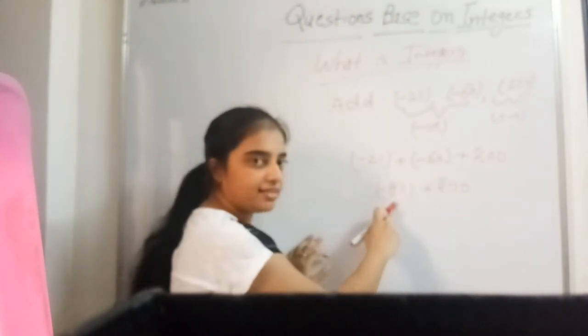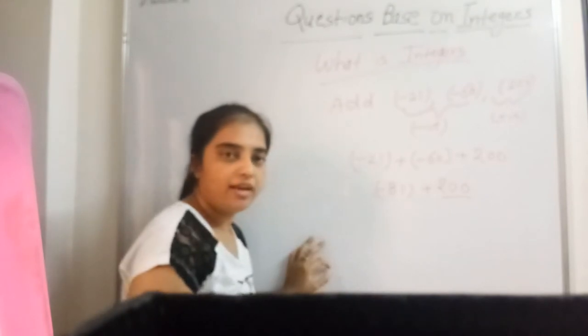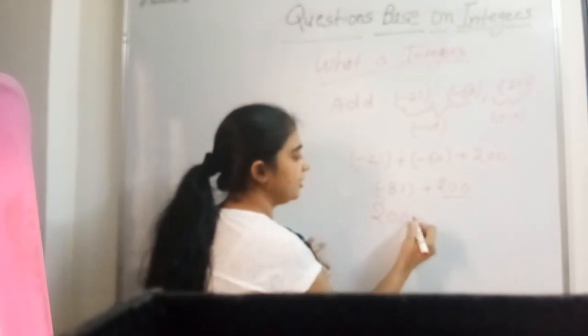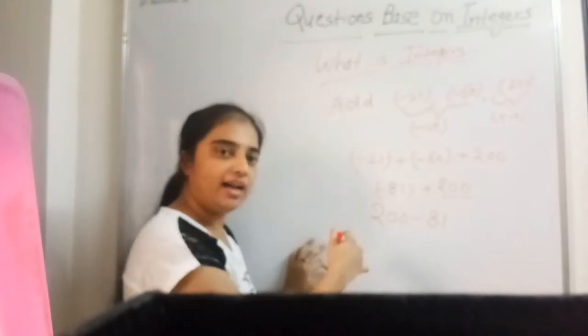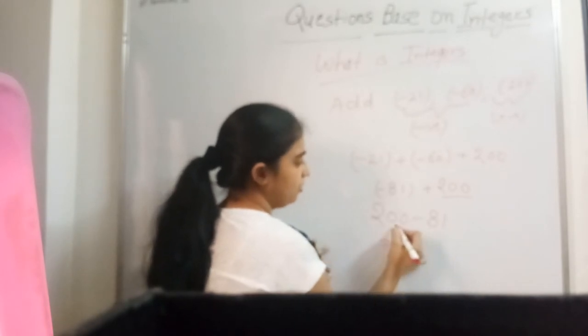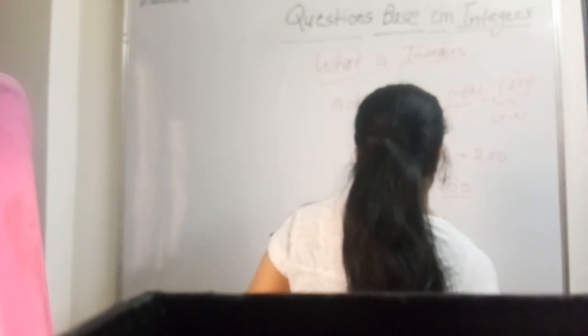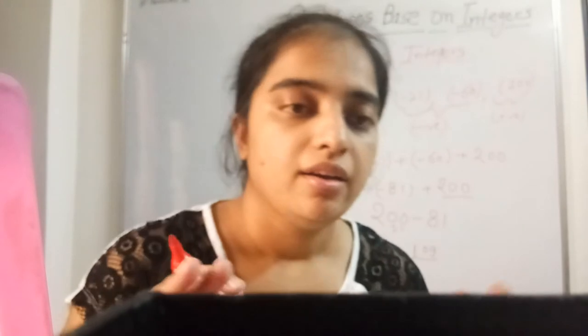Next step: in dono ka addition — minus 81 plus 200. Ab yahan dekho — 200 bada hai, 81 chhota hai. That means main likh sakti hun 200 minus 81. Positive number ko aage laao — 200 mein se minus 81 kitna ho jaega? The answer is 119.